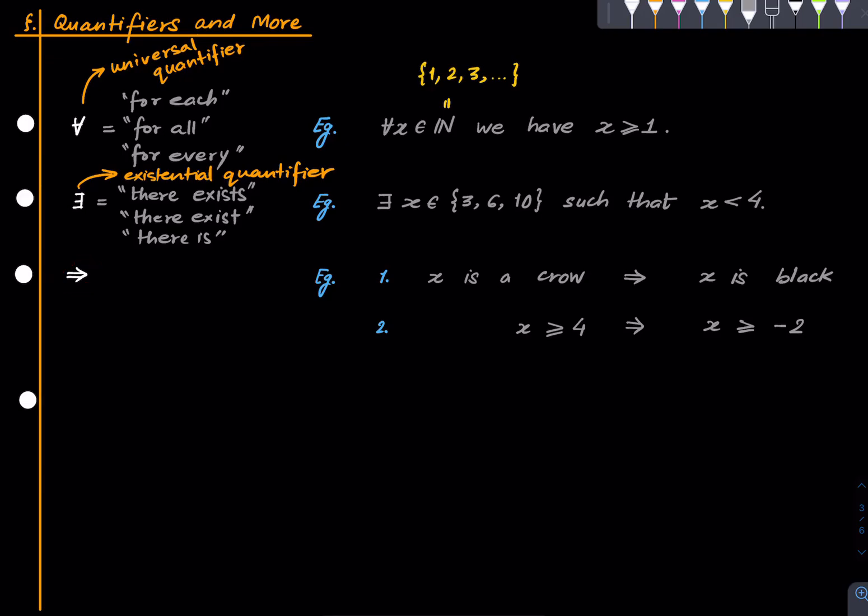This is not a quantifier; this is shorthand for 'implies'. Let's see an example: x is a crow implies that x is black, because we are assuming that all crows are black. A more unobjectionable statement would be: x ≥ 4 implies that x ≥ -2, clearly. It's just a nice shorthand for this thing. Sometimes someone may replace this by some synonym of 'implies', and that's okay.